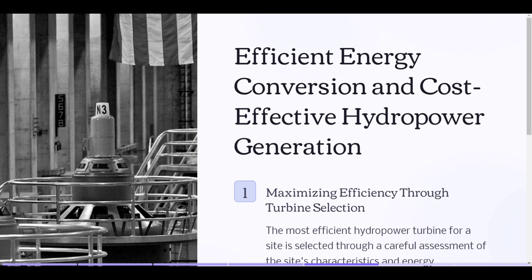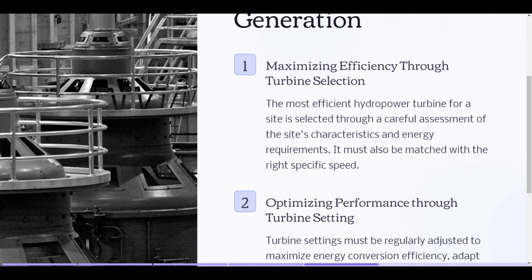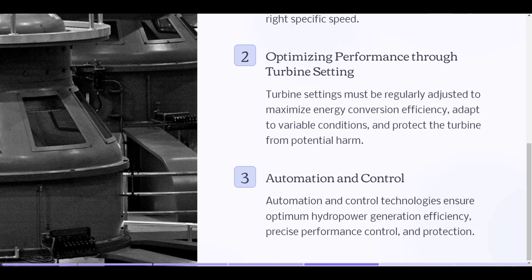Efficient energy conversion and cost-effective hydropower generation: The most efficient hydropower turbine for a site is selected through a careful assessment of the site's characteristics and energy requirements, and must be matched with the right specific speed. Turbine settings must be regularly adjusted to maximize energy conversion efficiency, adapt to variable conditions, and protect the turbine from potential harm.